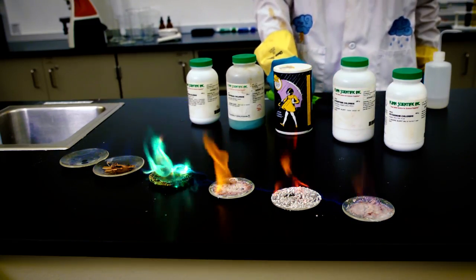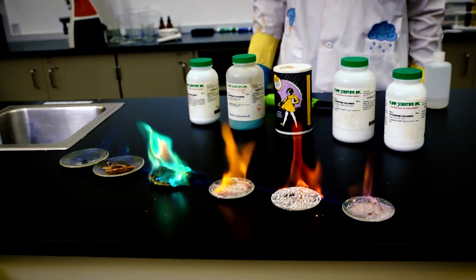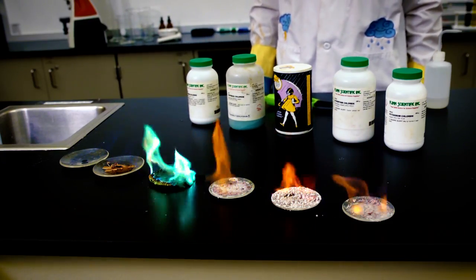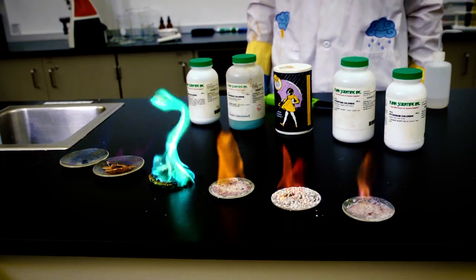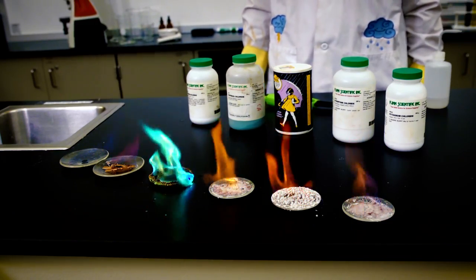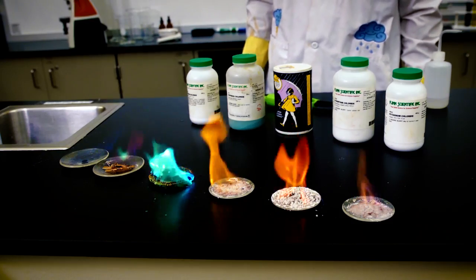So now going from left to right, we've got just normal denatured alcohol, it's going to be hard to see. We've got lithium chloride, you'll see that you actually need to soak it in wood. Our copper chloride, our regular sodium chloride or salt, strontium chloride and potassium chloride.